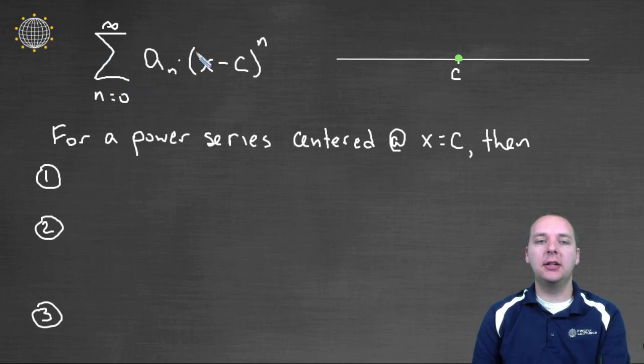So this is a general, pretty generic power series, a sub n times x minus c to the n that's centered at c. So I know that it converges here, but how far, if any, can I move to the left and to the right, and this power series still converge for certain x values.